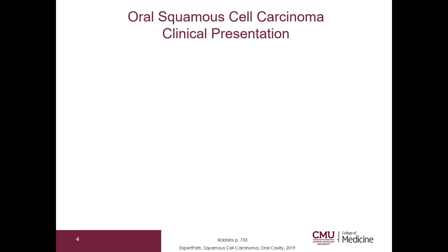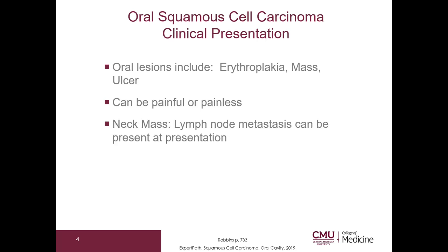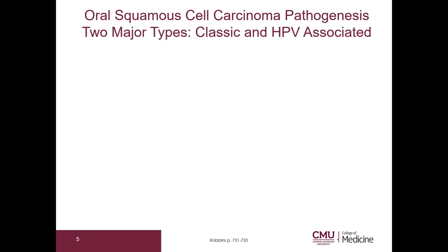Let's go on to oral squamous cell carcinoma. Oral lesions include erythroplakia, mass, or ulcer. They can be painful or painless. Sometimes oral squamous cell carcinoma can present as a neck mass — for example, a lymph node metastasis can be present at presentation. Some patients will have weight loss. Oral squamous cell carcinoma has two major types: classic and HPV-associated.